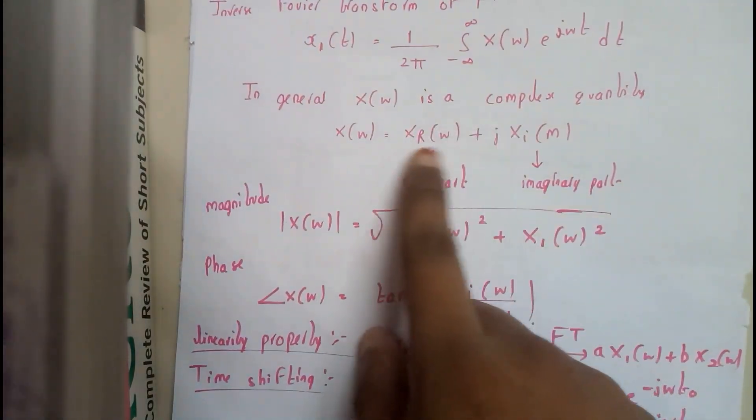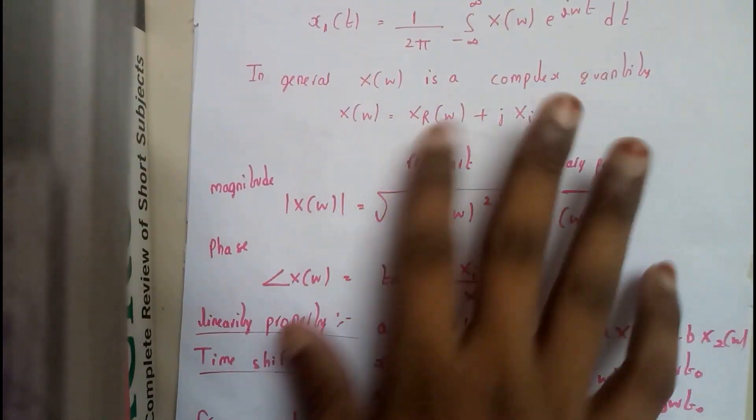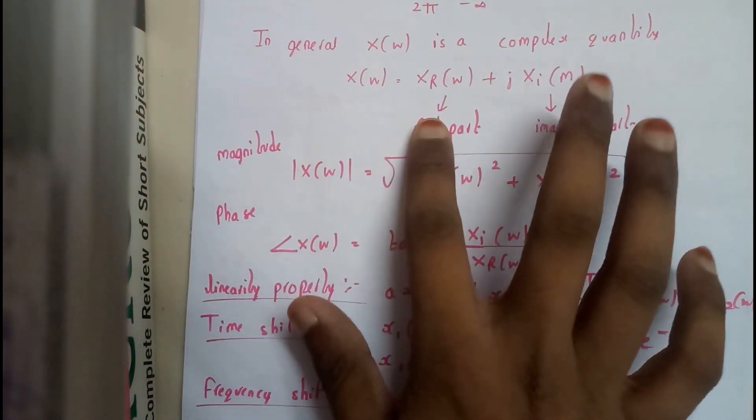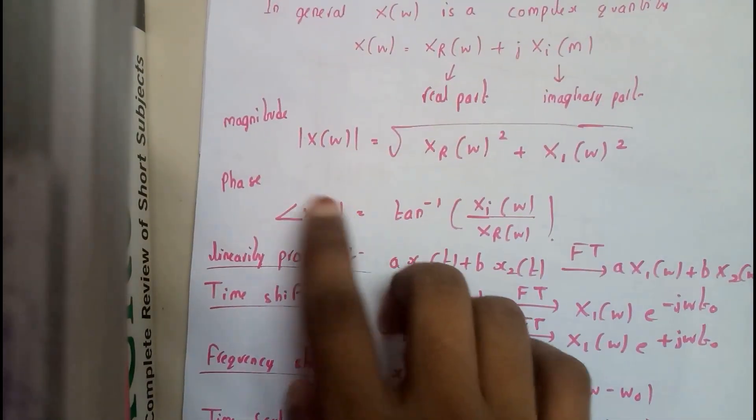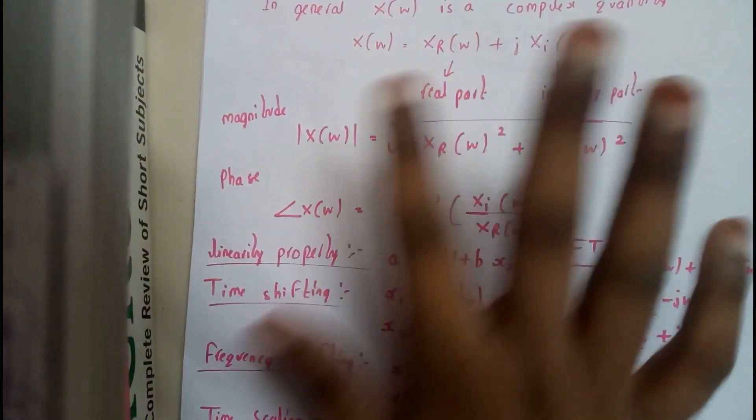And the general formula I hope everyone knows this. It has real part and imaginary part. So magnitude is nothing but this square plus this square whole under root. Phase is nothing but the imaginary part by real part.